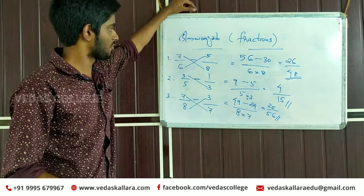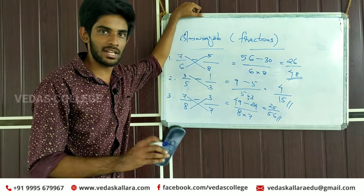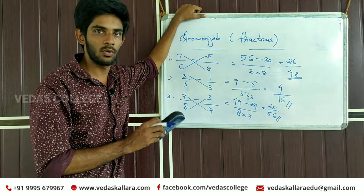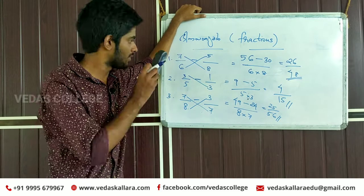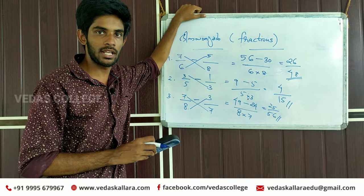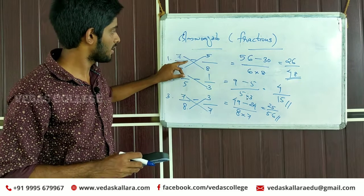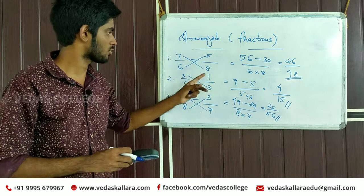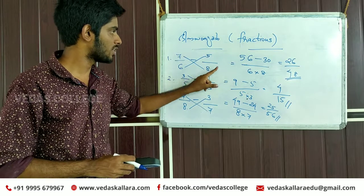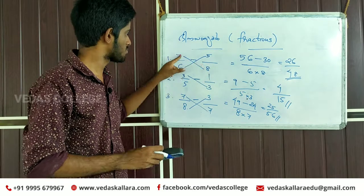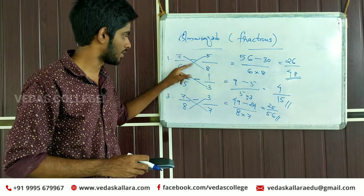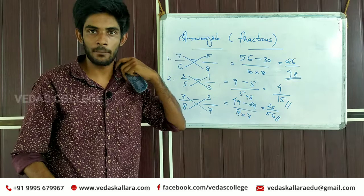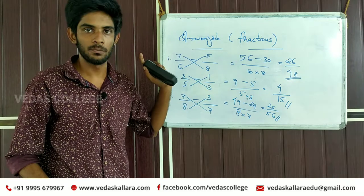We have addition and subtraction in fractions. In that case, there is the same denominator and the different denominator. For different denominators, we use cross multiplication. The answer comes from crossing and crossing. Are you clear? Okay.